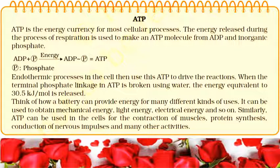You can think of how a battery can provide energy for many different kinds of uses — it can be used to obtain mechanical energy, light energy, electrical energy and so on. Similarly, ATP can be used in the cell for the construction of muscles, protein synthesis, conduction of nervous impulses and many other activities.